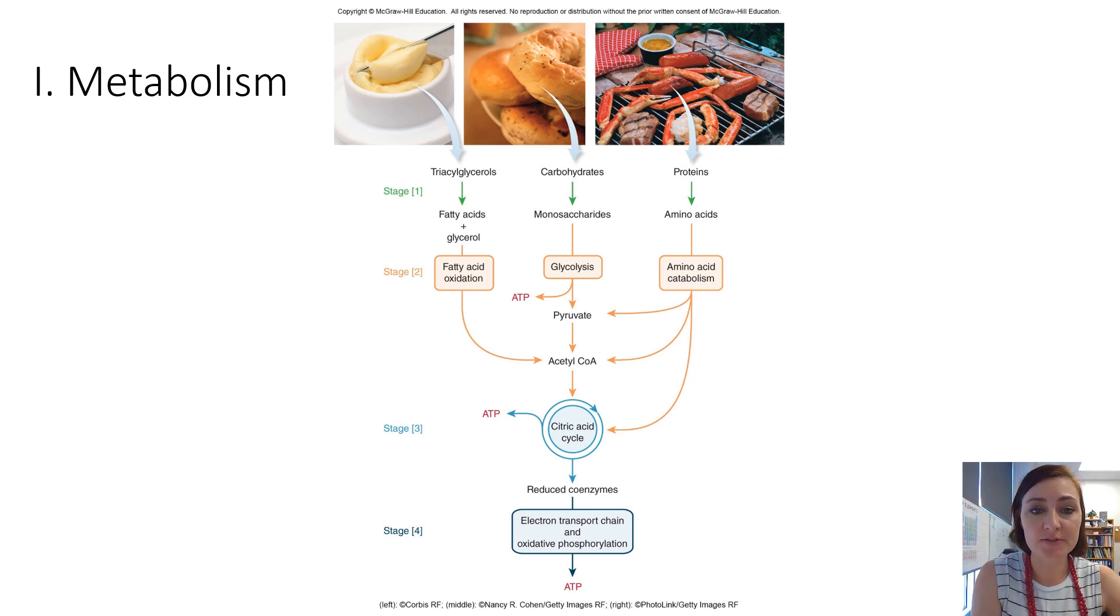So there are three types of foods that we can eat that will give us energy: fats, carbohydrates, and protein. Your body processes those differently, but notice that all of these arrows tend to come in to acetyl-CoA. So the goal is to take your lipids, carbohydrates, and proteins and form that acetyl-CoA.